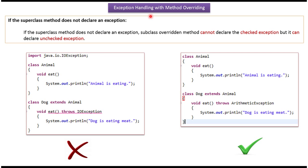Hi, in this video tutorial I will cover exception handling with method overriding. Here you can see the Animal class — it has an eat method. Here you can see the Dog class, which extends Animal class. So Dog class is a subclass and Animal class is a superclass. Dog class overrides the eat method.